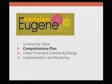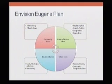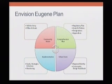As you know, we're working towards adoption of an Envision Eugene plan that has four components. Part one through four are: community vision, comprehensive plan, urban form and community design plan, and an implementation and monitoring plan. Those four all work together. In your packet you have a diagram showing how the four relate to each other and what's inside each document.